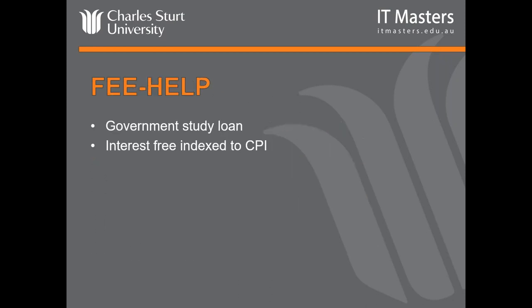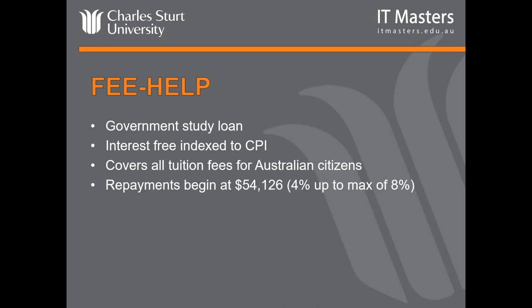Australian citizens get an interest-free government loan — you pay it back through your tax and don't start repaying until you're earning at least $54,000. That's part of the application process: when you fill in your online application, the university will send you an offer and ask how you're paying. You provide your tax file number and pay that back over time. All fees are tax deductible in Australia, and there's no GST on learning.